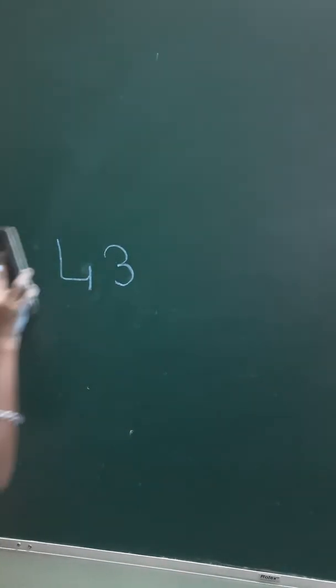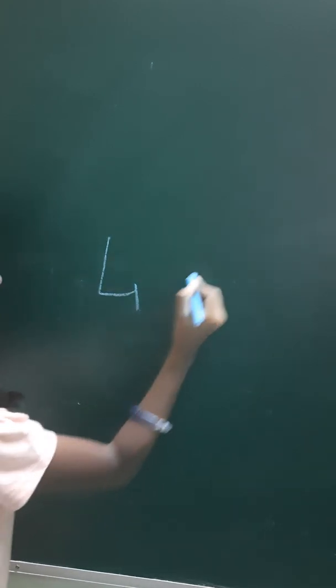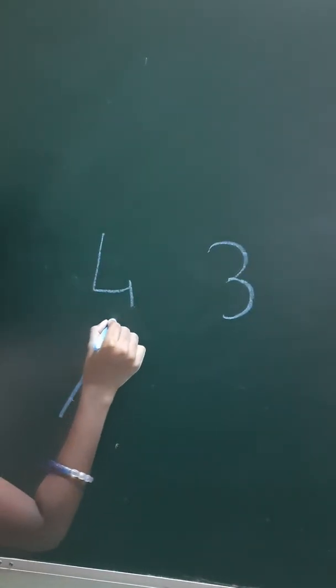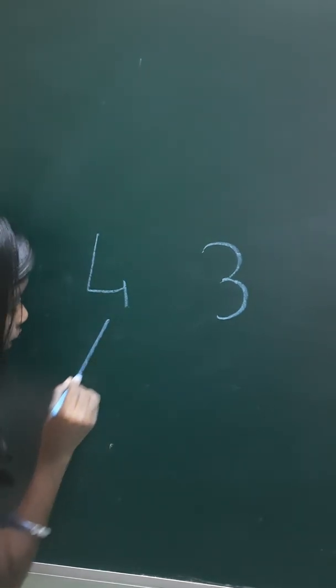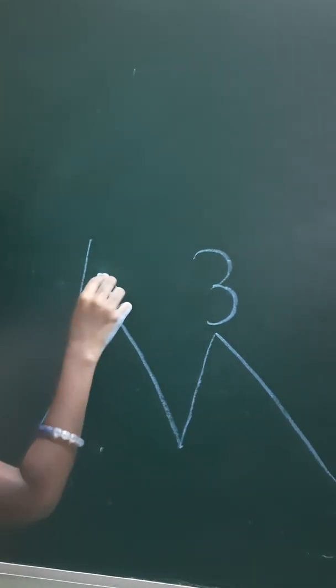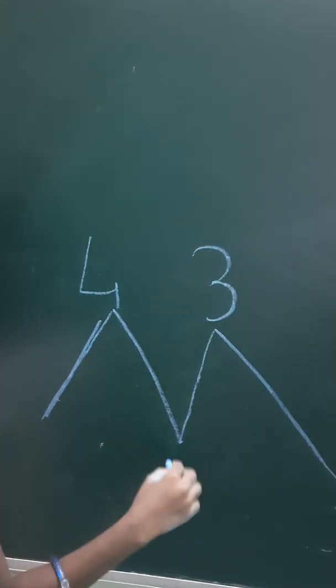First, you want to take these numbers, leave a little gap and you have to do like this. You have to draw a mountain like this and a mountain up. So like this, 4 is up this mountain and 3 is up this mountain.